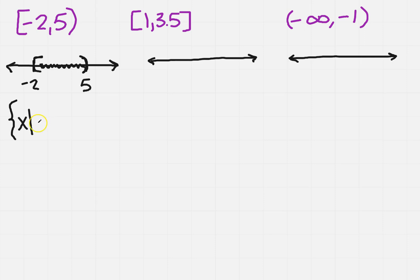Well, the number on the left is the minus 2. It is a bracket, so that means that it's going to be less than or equal to x, because we notice x is what we shaded. And then it's going to be less than 5 because it's only a parenthesis.